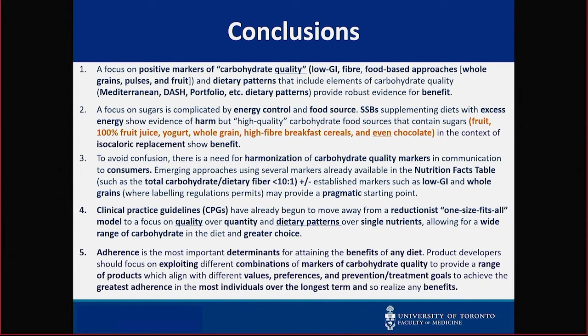Things like 100% fruit juice, yogurt, whole grain high-fiber breakfast cereals, and even chocolate — to avoid confusion there's a need for harmonization. Emerging metrics and approaches like Adam's NRF and the carbohydrate-to-fiber marker, as well as existing frameworks for low GI and whole grain labeling where allowed, are good pragmatic starting points. Clinical practice guidelines already support this approach, and the most important determinant of benefit is adherence — you've got to get past the mouth.